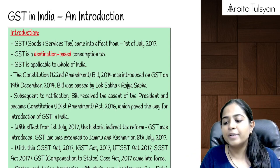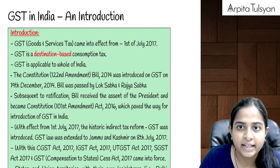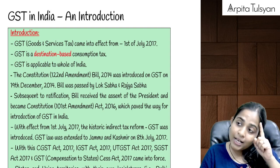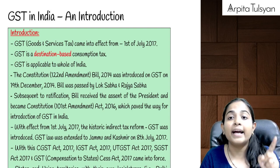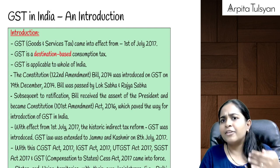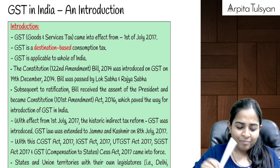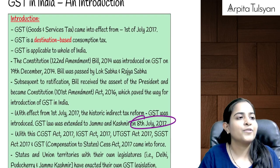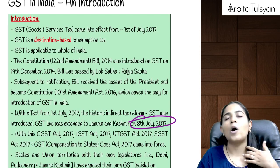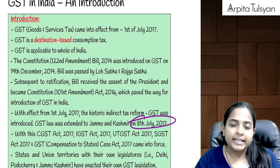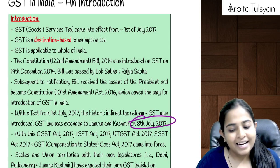GST came into picture on 1st July 2017. As on 1st July 2017, it was applicable to whole of India, excluding Jammu and Kashmir. But with effect from 8th July 2017, it was adopted by Jammu and Kashmir also. And now, as on today, the GST law is applicable to whole of India, including Jammu and Kashmir.